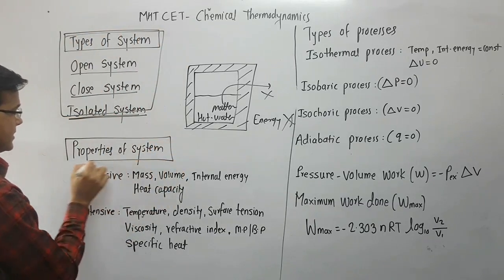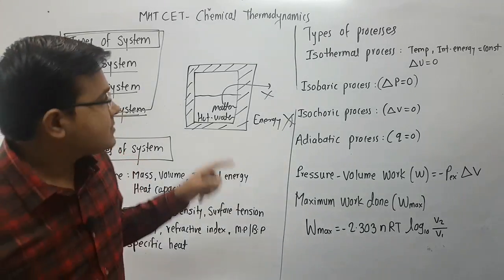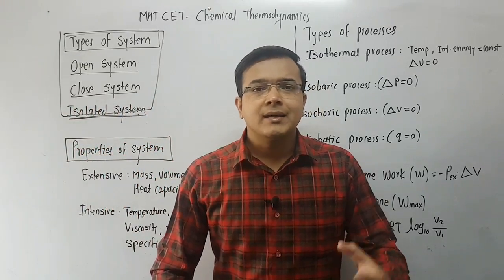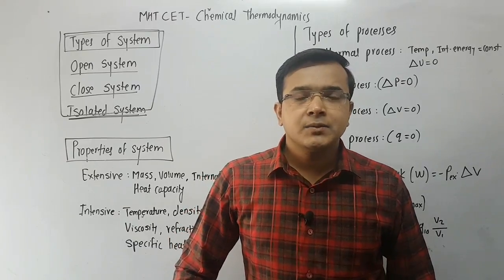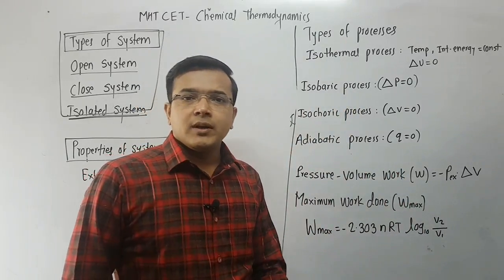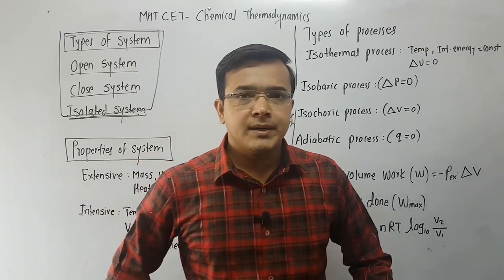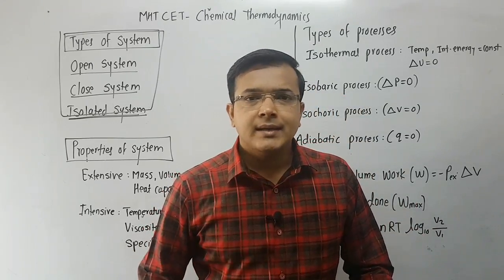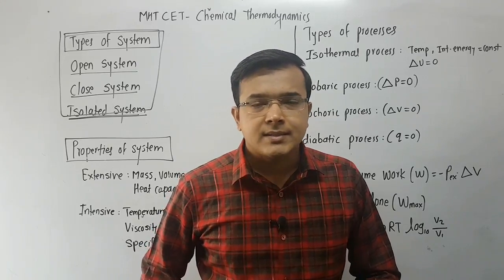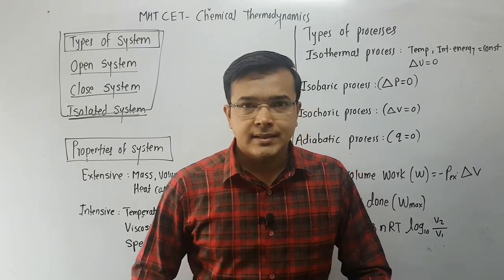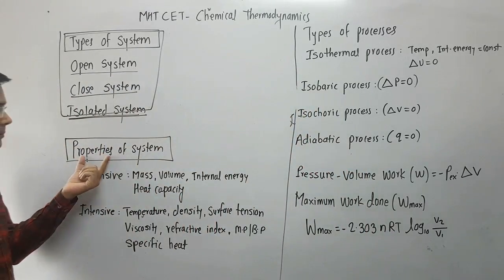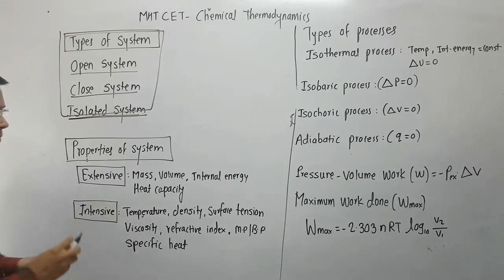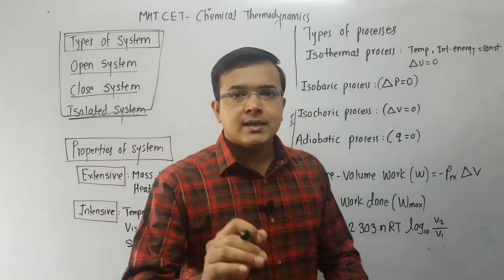Now the next topic from this chapter is properties of system. Every matter has mass, refractive index, melting point, boiling point, and heat capacity — the properties are different. Properties of system are divided into two categories: the first is extensive property and the second is intensive property.